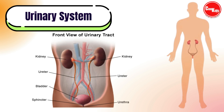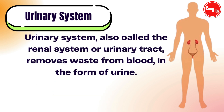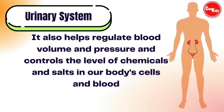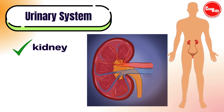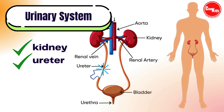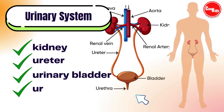The urinary system, also known as the renal system or urinary tract, eliminates waste from the body, regulates blood volume and blood pressure, controls levels of electrolytes and metabolites, and regulates blood pH in the form of urine. It also helps control the level of chemicals and salts in our body's cells and blood. The urinary system includes the kidneys, ureters, urinary bladder, and urethra. The system filters our blood, removes waste and excess water, which is expelled as urine.